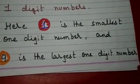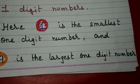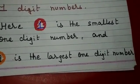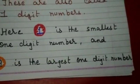Here one is the smallest one digit number and nine is the largest one digit number that can be counted.